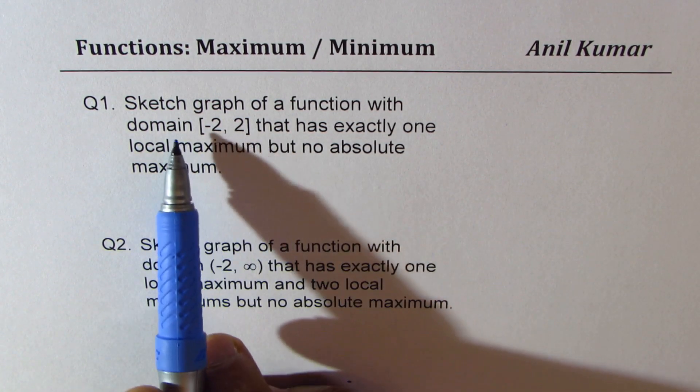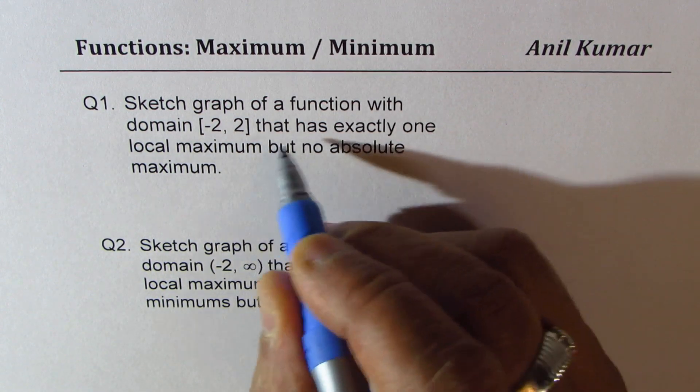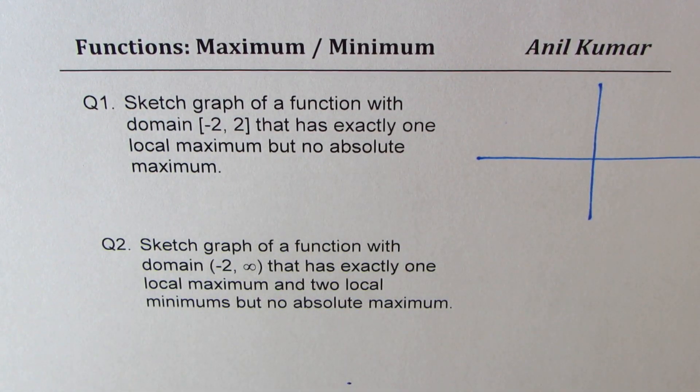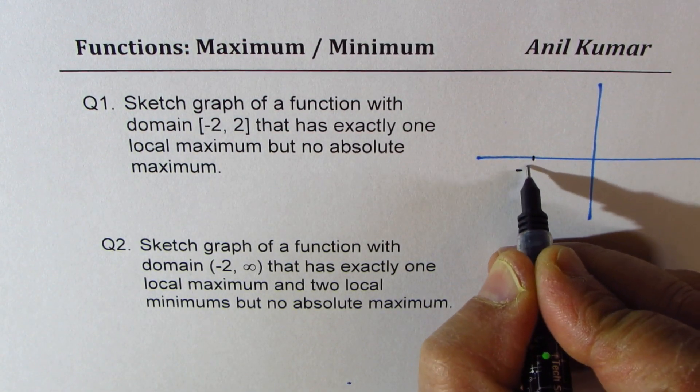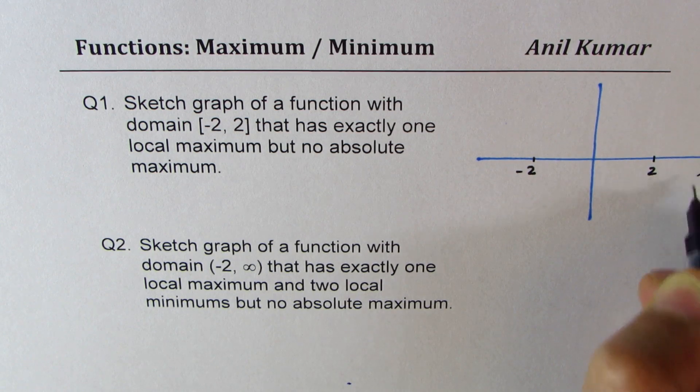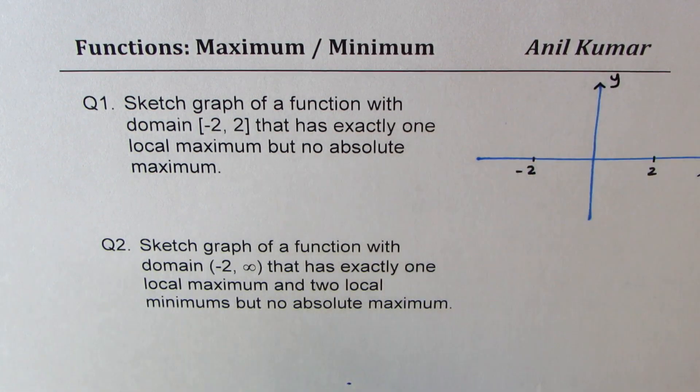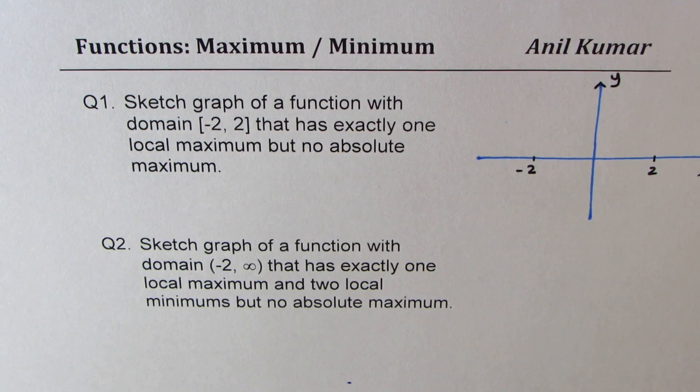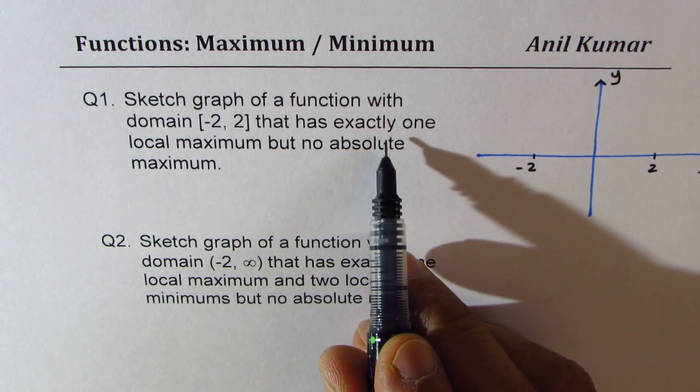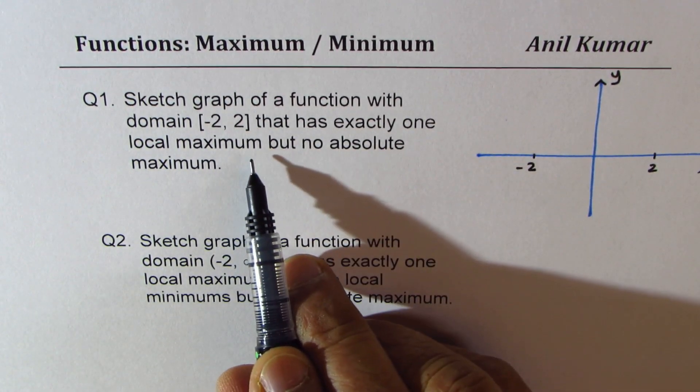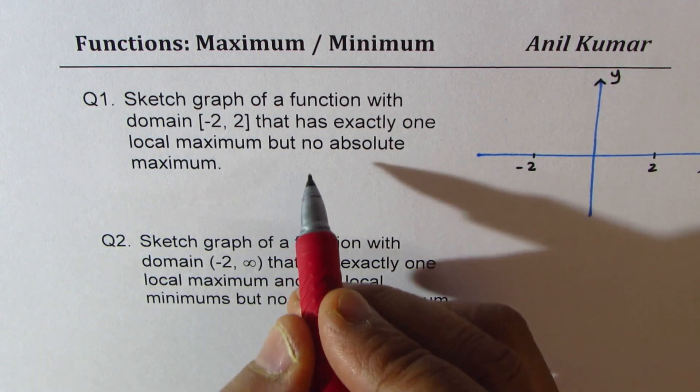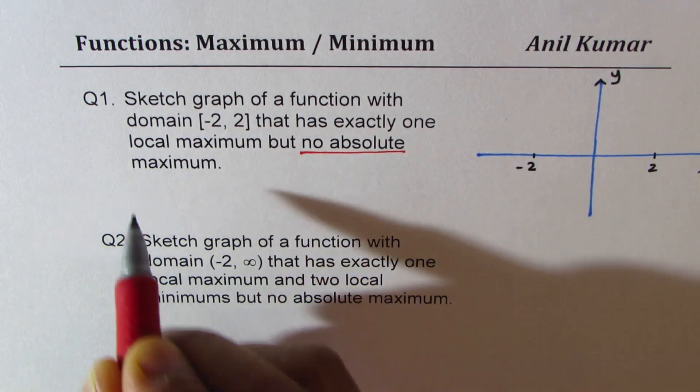Now let's try to sketch this graph. So within minus 2 and plus 2, let's say this is minus 2 for us and that is plus 2 for us. We need to sketch the graph. These two points are included. That has exactly one local maximum but no absolute maximum.